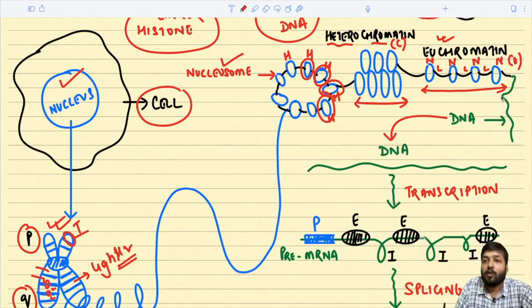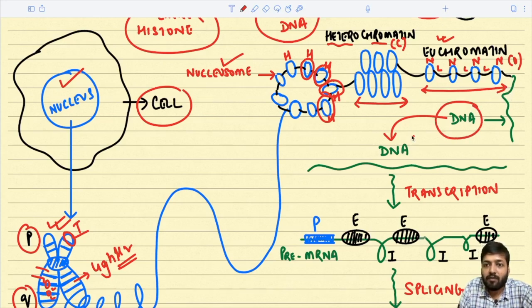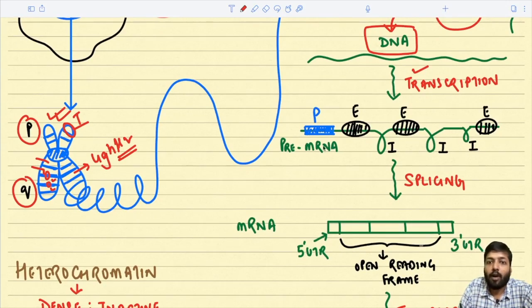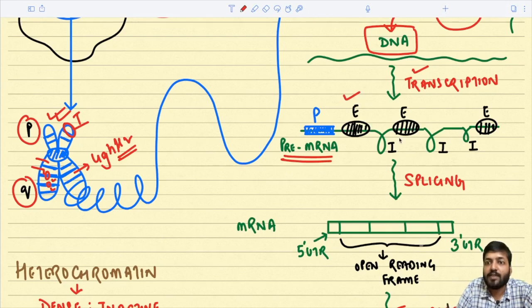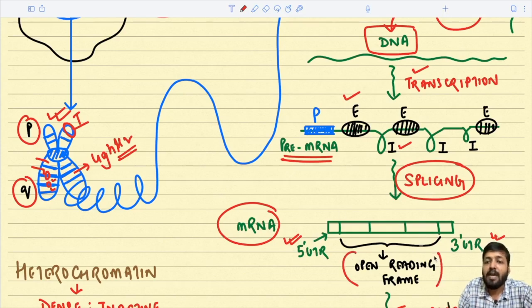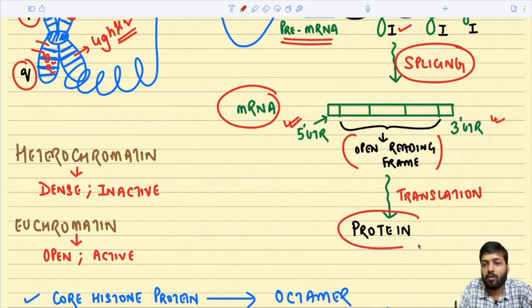In contrast, there are certain lighter areas corresponding to open-up chromatin called euchromatin. These are nucleosomes comprising histones wound around by DNA, with linker DNA and linker histone connecting them. The difference is that heterochromatin is condensed and closed while euchromatin is open and active. When the chromatin is open in the euchromatin, transcription is active.